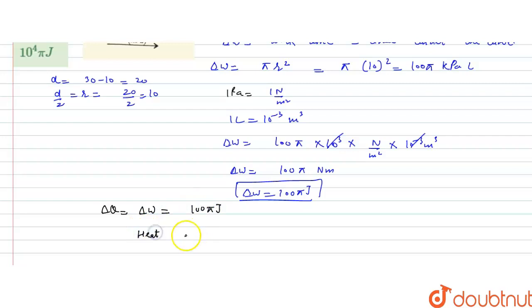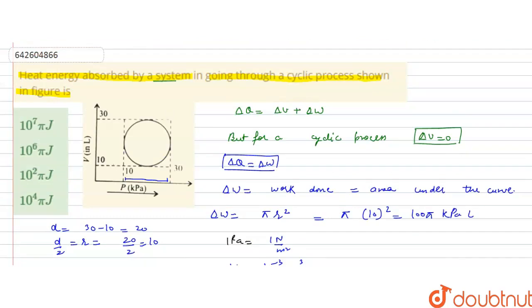It means, heat energy absorbed by system is 10 to the power 2 pi Joule. So, correct answer to this question is, C option, 10 raised to power 2 pi Joule, that is, 10 to the power 2 pi Joule.